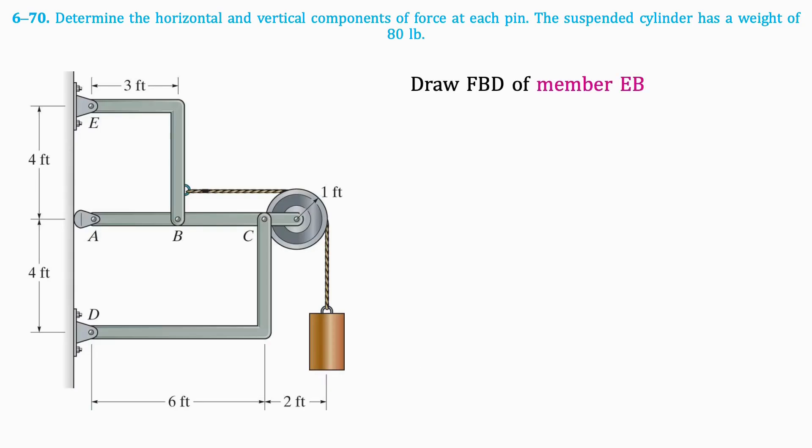Next, we'll draw the free body diagram for member EB. As previously determined, the force along the cable is 80 pounds. At E and B, there are pins, so we will draw both X and Y components.